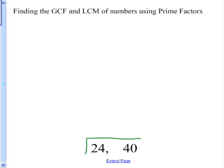Just like we did when we were finding all the prime factors, we want to divide by the smallest prime that goes into both 24 and 40. 2 goes into 24 12 times, and 2 will go into 40 20 times.